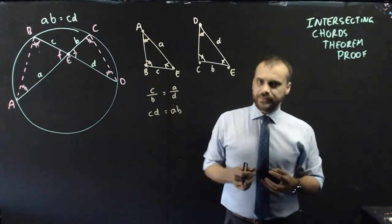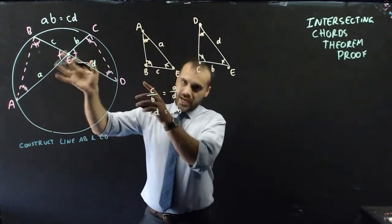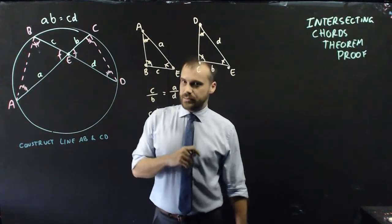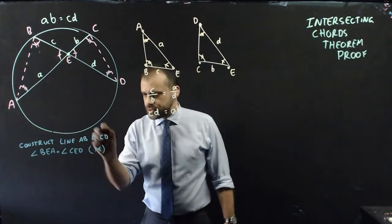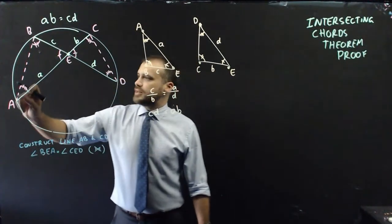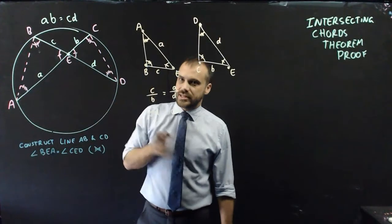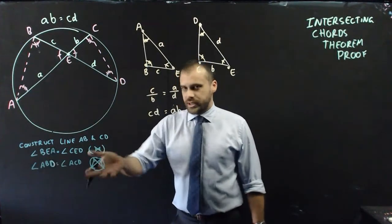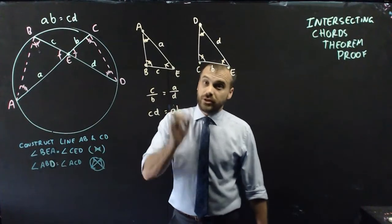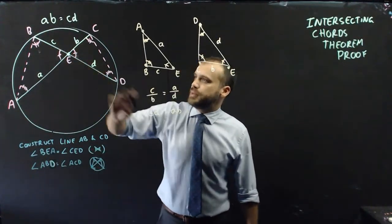I'm just going to formalize it a little bit. First thing I did was construct line AB and line CD, so I'd have two triangles. Next, I looked at those angles and saw that they were the same because they were vertically opposite. From there, I can say that angle ABD and angle ACD are the same because of angles subtended off the same arc. And we can say the same for angle BAC and angle BDC.